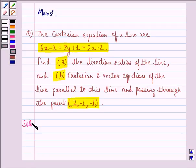Let us see the solution to this question. The given line is 6x minus 2 equals 3y plus 1 equals 2z minus 2.